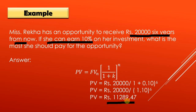So the Rs. 20,000 you will receive in the future after 6 years has a present value of Rs. 11,289. This is the present value of your future money, and this is the example of present value of a single sum of money.